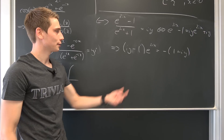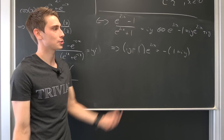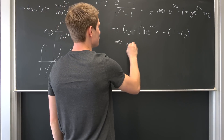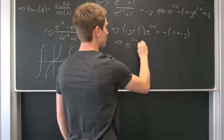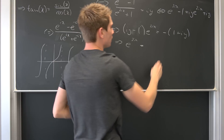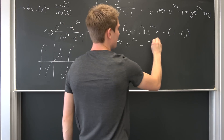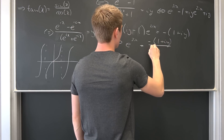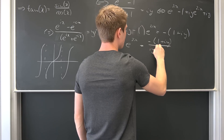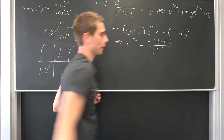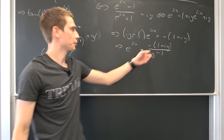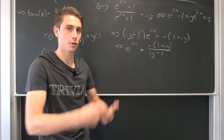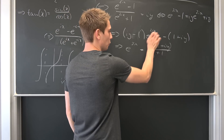Dividing both sides by (i·y − 1) gives us e^(2ix) = (−1 + i·y) / (i·y − 1). We can distribute the negative sign into the denominator just to change the signs around — that looks better.